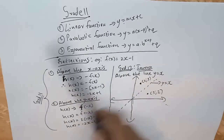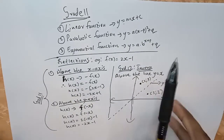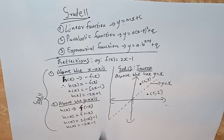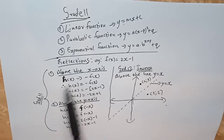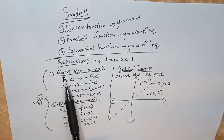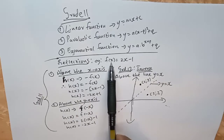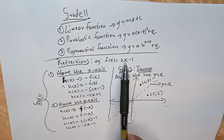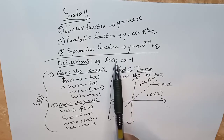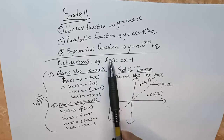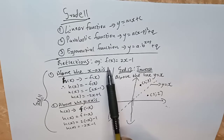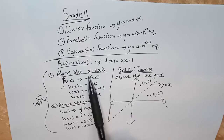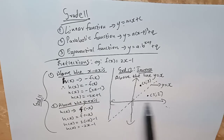Now that you know this from grade 11, let's talk about reflections, because inverse functions are nothing but reflections. In grade 11 you were told that reflecting above the x-axis — for example if f(x) = 2x minus 1 and you have to reflect f(x) above the x-axis to get h(x) — you know that h(x) will be the negative of the function.